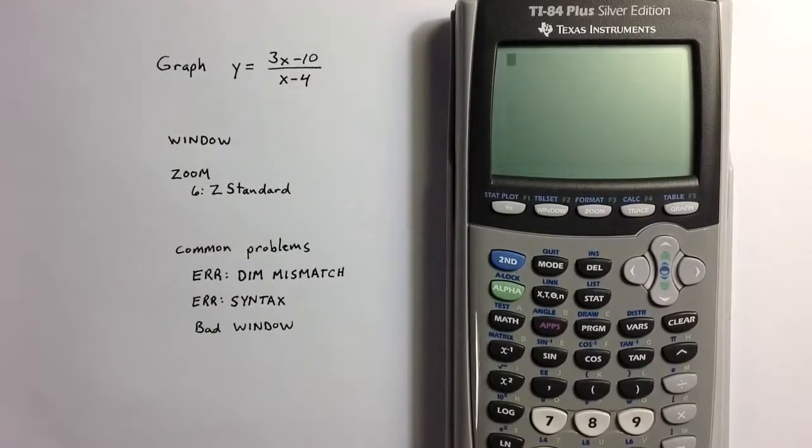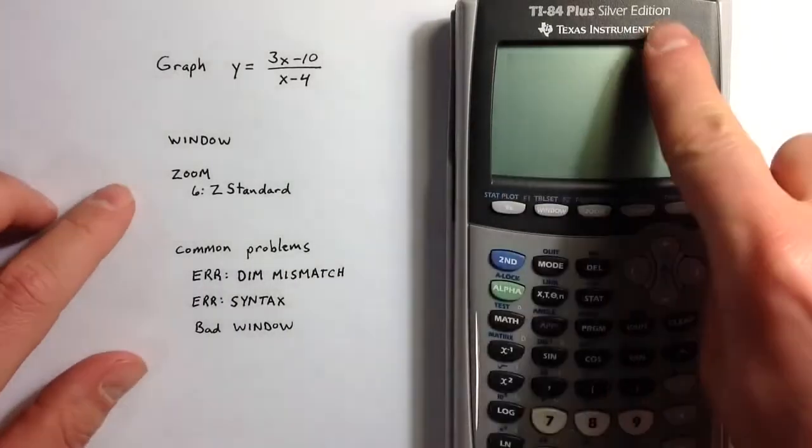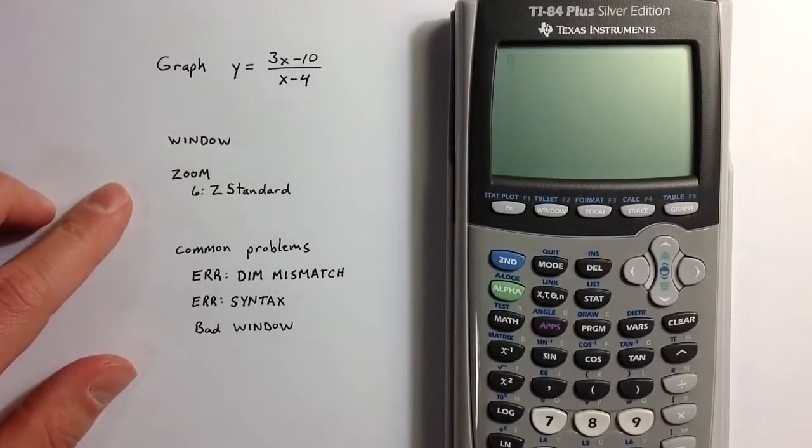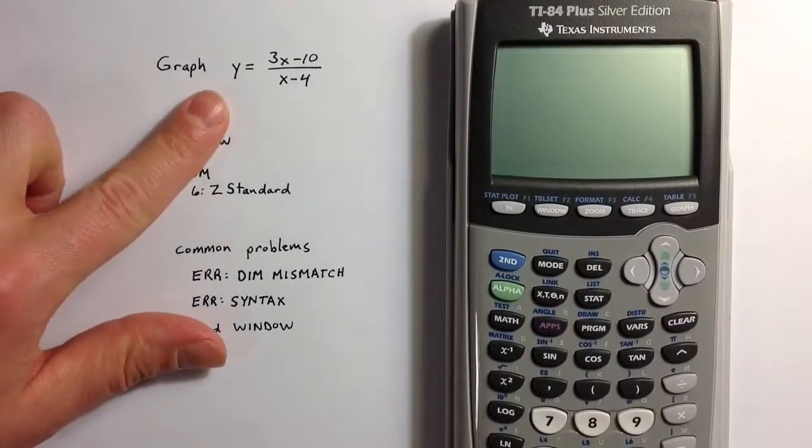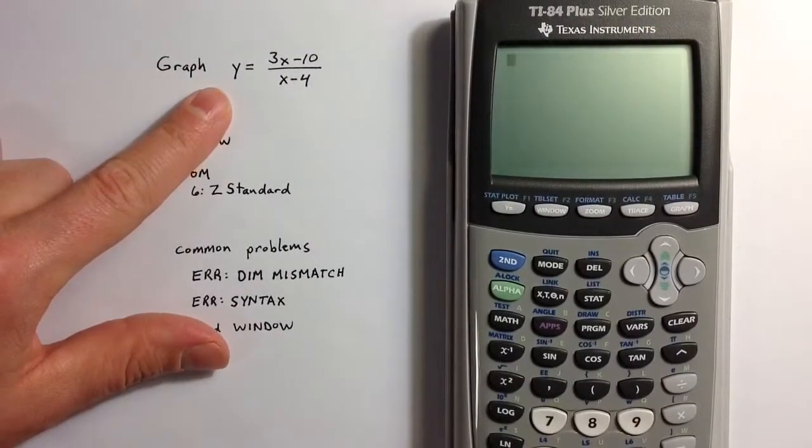This video describes the graphing feature of a TI-84 and TI-83 graphing calculator. If we want to graph a function like y equals 3x minus 10 over x minus 4...